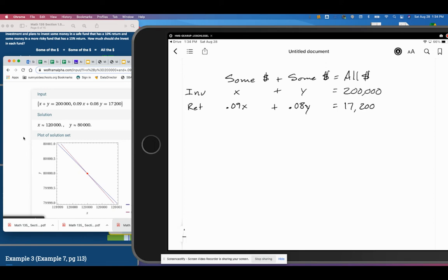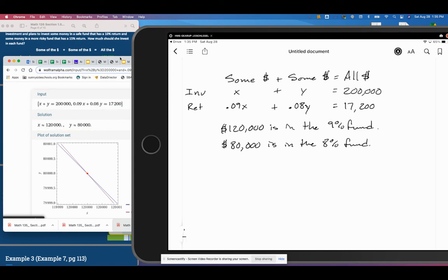So X goes with the 0.09. So $120,000 is in the 9% fund, and $80,000 is in the 8% fund. And again, all we need to do is match the X with the X and match the Y with the Y. So since 9 is with the X and $120,000 is with the X, it tells us that $120,000 is in the 9% fund. And the same thing for the Y value. And that's it for this problem.